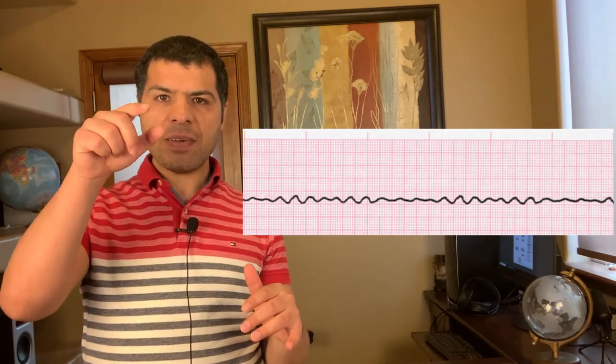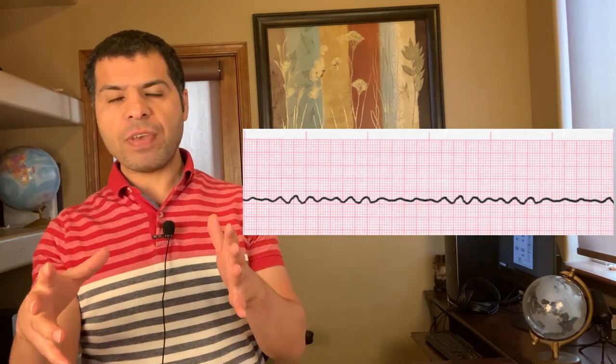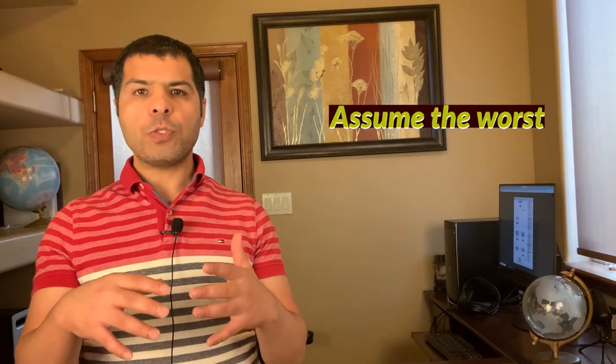Sometimes the rhythm is not clear-cut on the monitor. You'll see fine fibrillation and don't know if it's asystole or V-fib. Sometimes you don't know if there is ventricular tachycardia or sinus tachycardia with aberrancy. But in a code situation, assume the worst. Assume it's ventricular fibrillation or pulseless V-tach and go ahead and shock the patient. Don't assume it's PEA. If you're not sure if it's PEA, asystole, or V-fib, assume the worst — assume the thing that we could save the patient's life with. If I have even a low suspicion that it's V-fib or V-tach, I'll go ahead and shock. Don't be shy about asking for help in reading the rhythm.